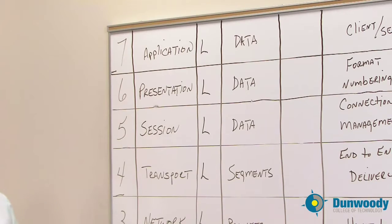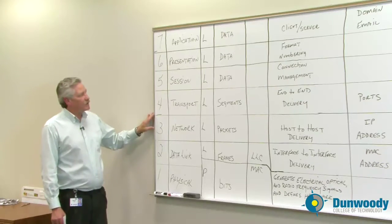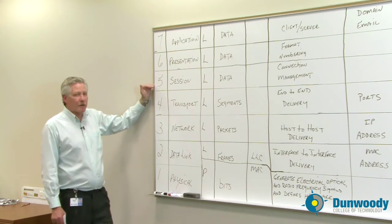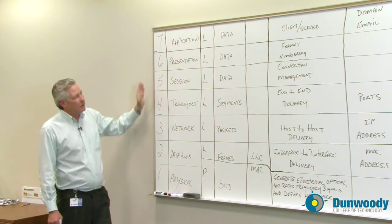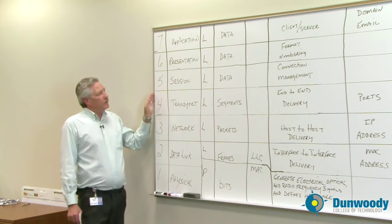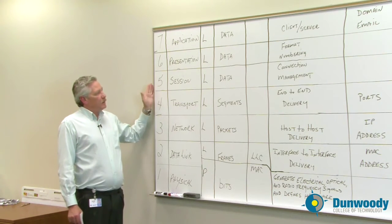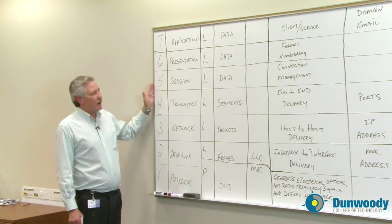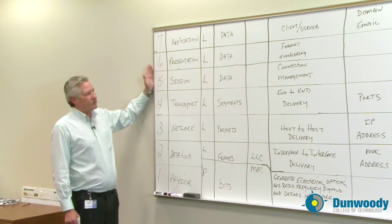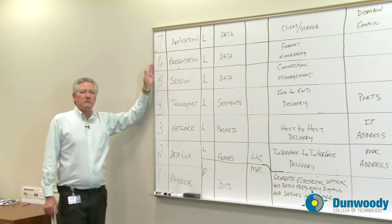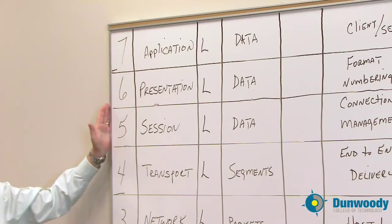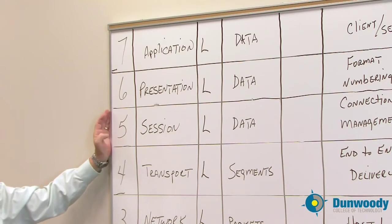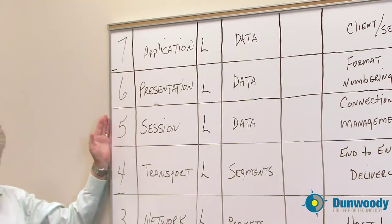In most models, except for the OSI model, these three layers are combined into one. But in the OSI model, they broke them out, and depending on who you're talking to, for good reason. So we're going to start with layer five, the session layer.